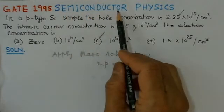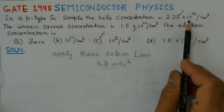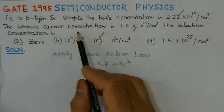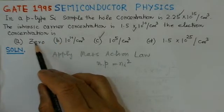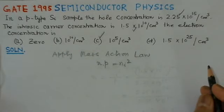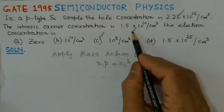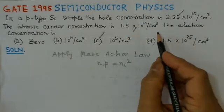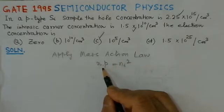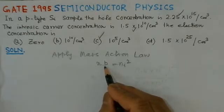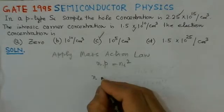This is a GATE problem of 1995 from semiconductor physics. The problem states: in a p-type silicon sample, the hole concentration is 2.25 × 10^15 per centimeter cube and the intrinsic carrier concentration is 1.5 × 10^10 per centimeter cube. The electron concentration is to be found. Since the hole concentration and intrinsic carrier concentration are given, and the sample is in thermal equilibrium, we can apply the mass action law: n × p = ni².